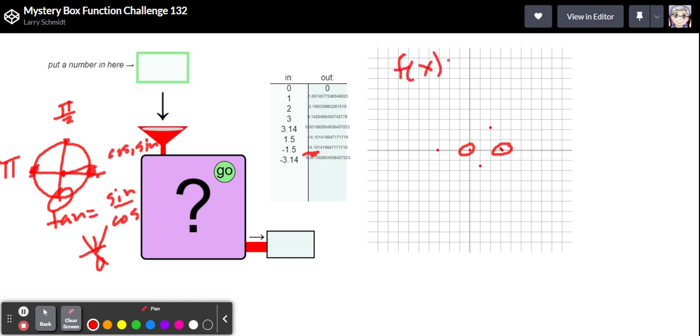So we've seen the tangent before. This looks like that but just with the signs reversed which we can see from those values near pi over 2. So f of x equals a negative tangent of x. That's what I think. I'm going with that. Let's reveal.